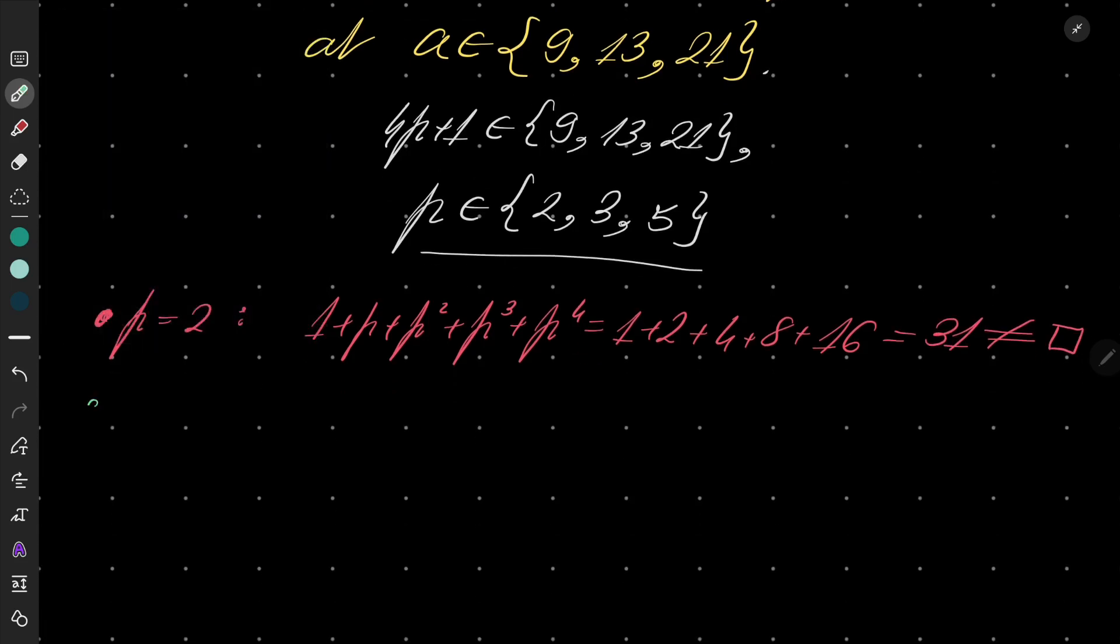When p equals 3, 1 plus p plus p squared plus p to the third power plus p to the fourth power is 1 plus 3 plus 9 plus 27 plus 81.